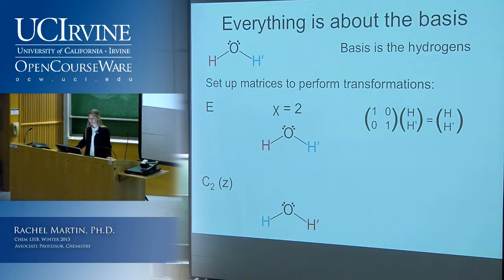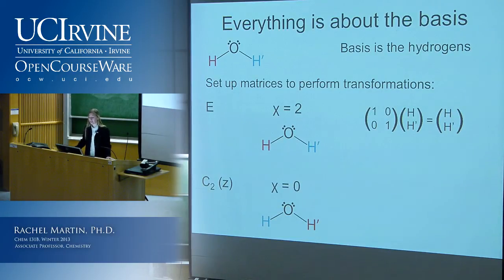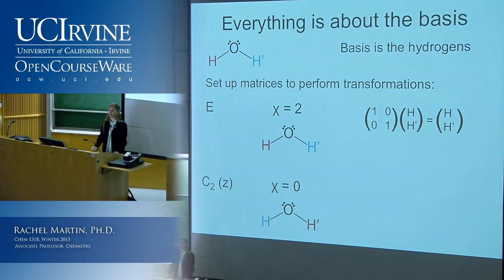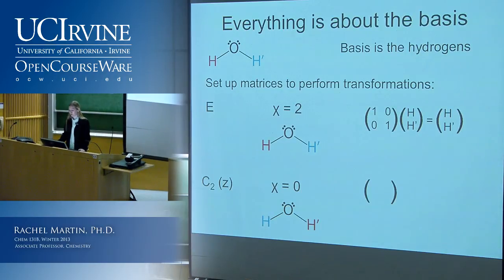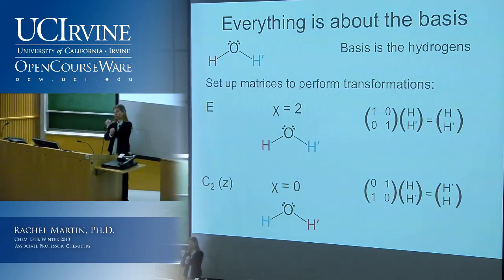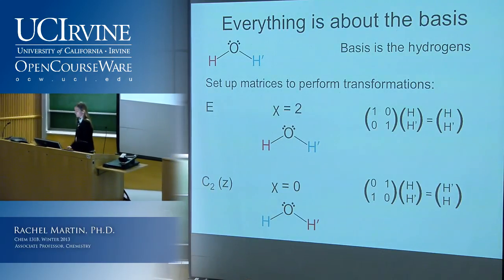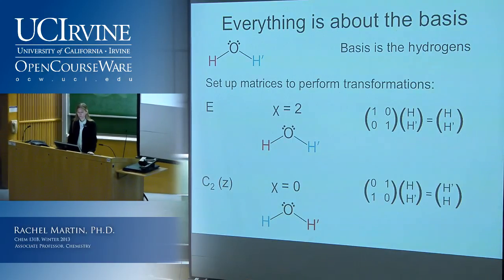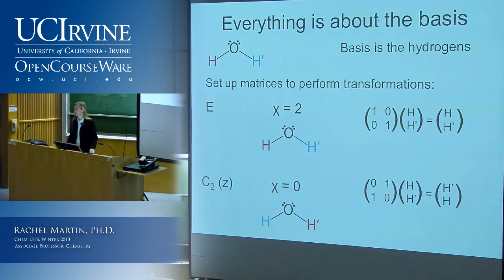Now we can look at our C2 operation. We already know what that does — it swaps the hydrogens. So if that's our basis and one changes places with the other, that character is going to be zero. We can use that shortcut, and we can also set up the actual matrix — that's the matrix that makes these things flip position. I'm not going to do the other two right this minute; I will leave it as an exercise.